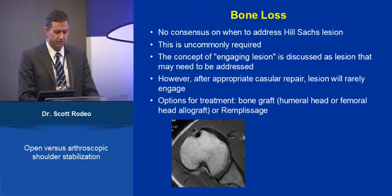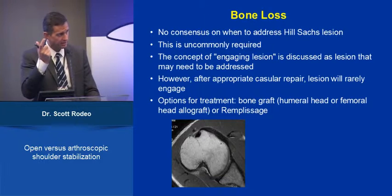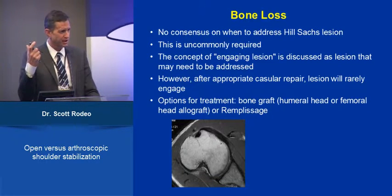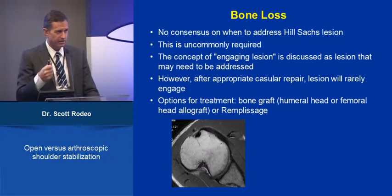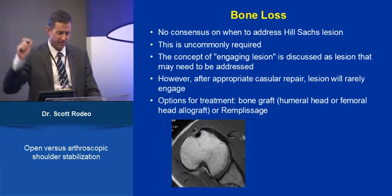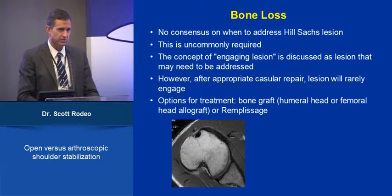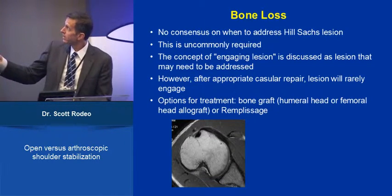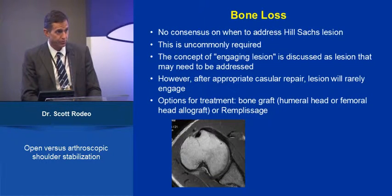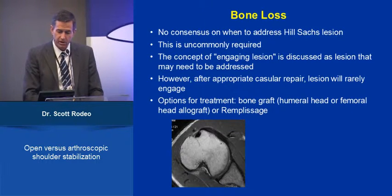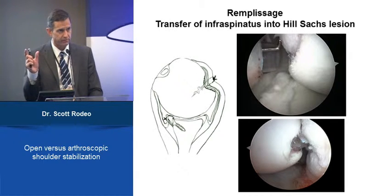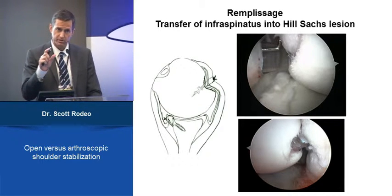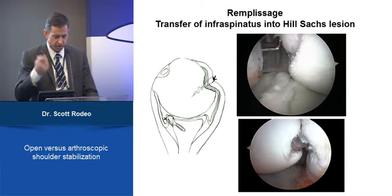Regarding the Hill-Sachs lesion, I agree with Dr. Etoile — it's uncommon that we need to address it surgically. The concept of a glenoid tract makes very good sense. The engaging lesion concept doesn't make sense either: if you have a tight enough shoulder, it won't engage. After appropriate capsular repair, the lesion will rarely engage unless it's very large or there's associated glenoid bone loss. Options for treatment, if needed, are bone grafting or the remplissage procedure — the repair of the infraspinatus tendon into the Hill-Sachs defect, rendering the lesion extra-articular. However, remplissage changes your kinematics and your glenoid tract, and motion loss is always a concern.